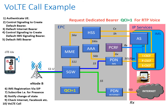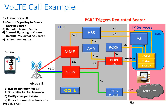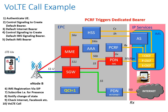Different types of services will have different QCI values. A QCI of one, for example, indicates that the maximum amount of latency tolerated for this type of service is 100 milliseconds. The PCRF together with the MME will then set up the signaling to establish yet a third bearer across the network for the VoLTE call.